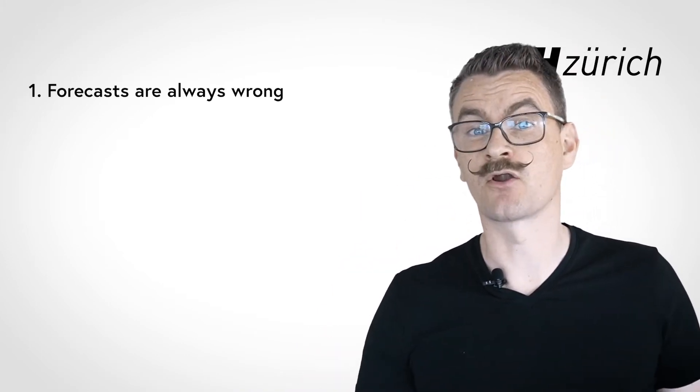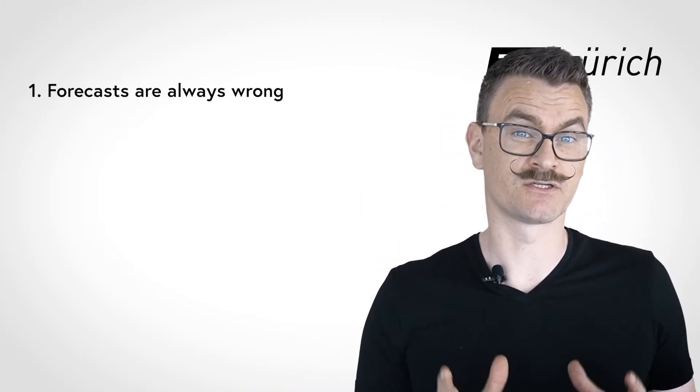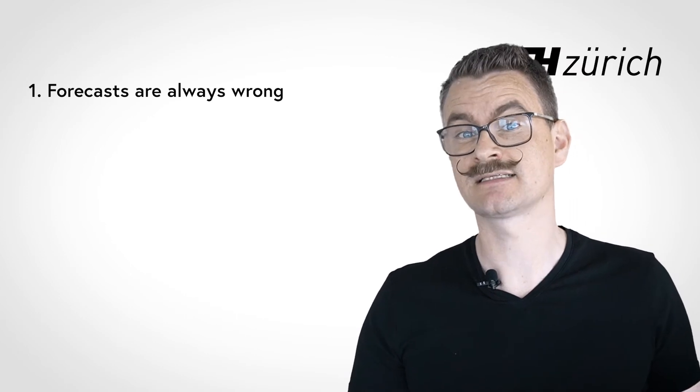Let me close this lecture by spelling out six general principles about forecasts. First, forecasts are always wrong. A good forecaster does not aim to be right, but to be less wrong.